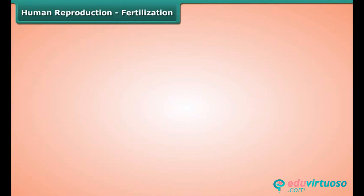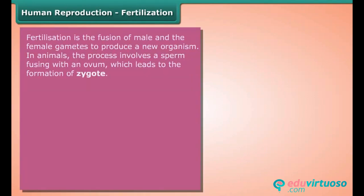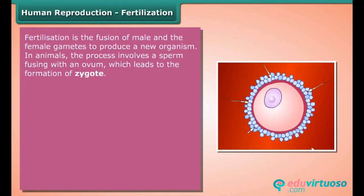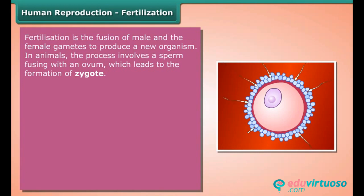Fertilization is the fusion of male and female gametes to produce a new organism. In animals, the process involves a sperm fusing with an ovum, which leads to the formation of a zygote.